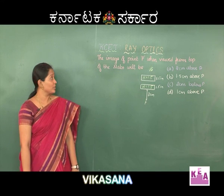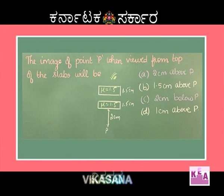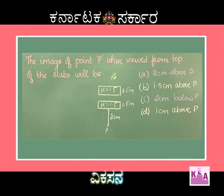Students, let's move on to the next question. The image of point P when viewed from the top of the slabs will be - the options are: option A, 2 centimeters above P; option B, 1.5 centimeters above P; option C, 2 centimeters below P; and option D, 1 centimeter above P.